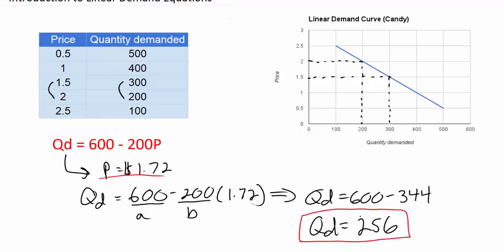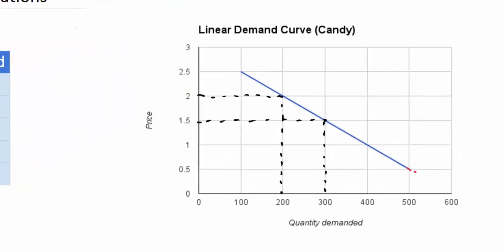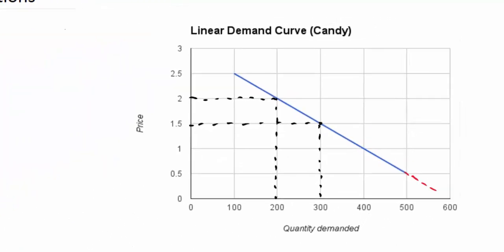Now that's what's nice about having a demand equation. We can determine exactly what the quantity demanded will be at any price between the Q-intercept, which is where the demand curve starts on the horizontal axis, and the P-intercept, which is where the demand curve ends on the vertical axis.